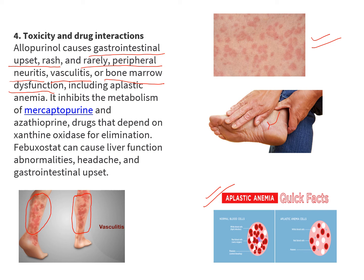When you inhibit xanthine oxidase, it has an effect on certain drugs like mercaptopurine and azathioprine. These drugs depend on xanthine oxidase for their elimination. If xanthine oxidase is blocked, there can be accumulation of these drugs, causing an increase in their concentration. You need to take care when dispensing allopurinol or febuxostat together with these two drugs, as it can affect their elimination.